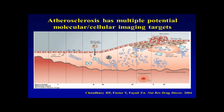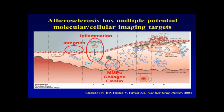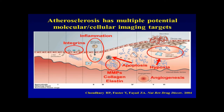From the molecular imaging standpoint, this gives us many potential imaging targets. Integrins or adhesion molecules are expressed early in disease activation. Inflammation is a critical phase associated with vulnerability. MMPs, collagen, and elastin have also been targets for molecular imaging studies. Apoptosis can be imaged with annexin and other agents. Hypoxia has been an area of interest with the necrotic core that can develop. Angiogenesis is also active in both coronary and carotid plaque development. And importantly, fibrin, platelets, and other markers of thrombus or hemorrhage are clearly indicative of a vulnerable or high-risk plaque.